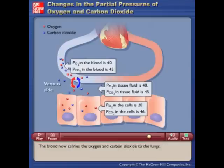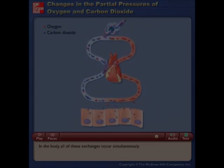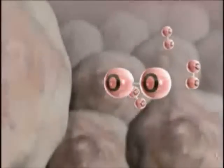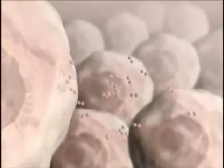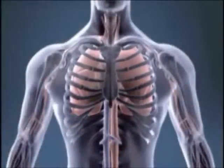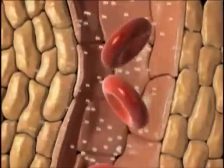The blood now carries the oxygen and carbon dioxide to the lungs. In the body, all of these exchanges occur simultaneously. All cells need oxygen — it is the essential fuel necessary to enable cells to stay alive and carry out their various activities. Bringing oxygen to the cells requires the uptake of oxygen from the air in the lungs, its transportation in the blood, and its delivery to cells all over the body.